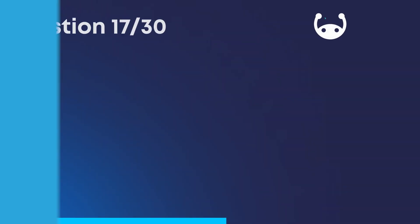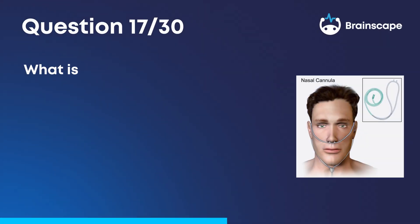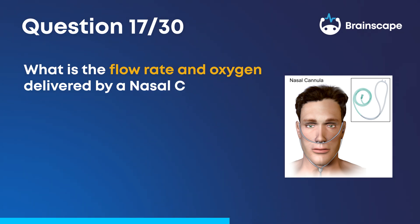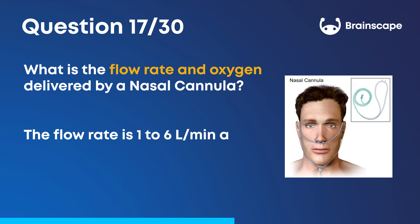Question 17. What is the flow rate and oxygen delivered by a nasal cannula? The flow rate is 1 to 6 liters per minute at 24 to 44% oxygen.